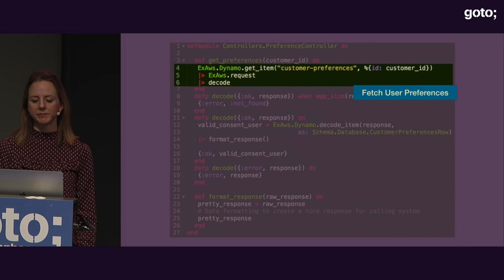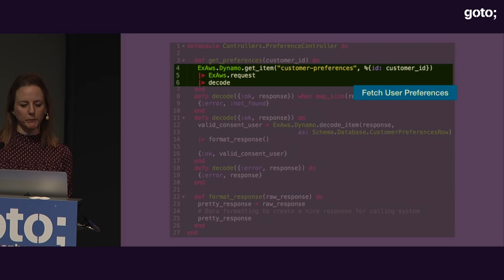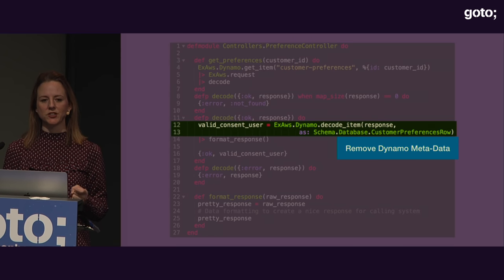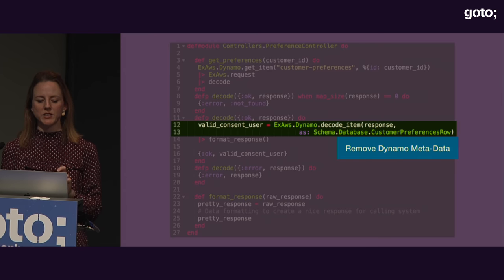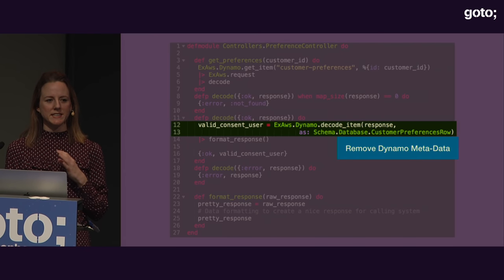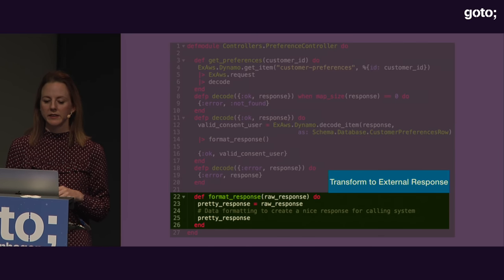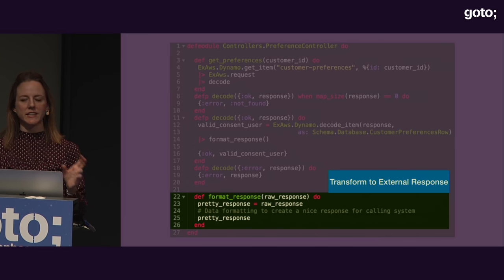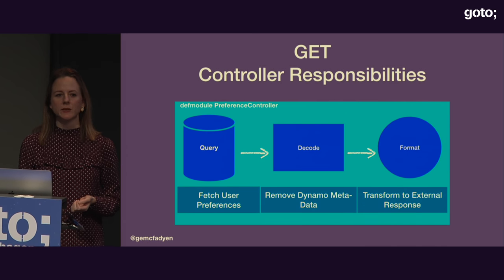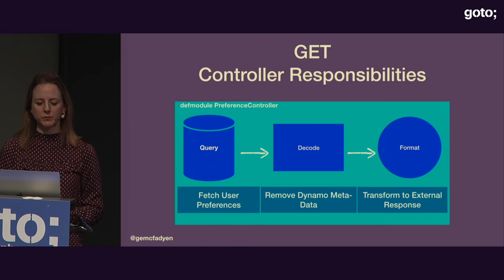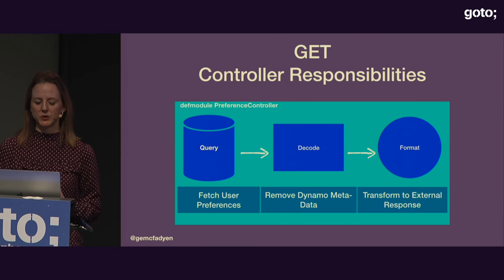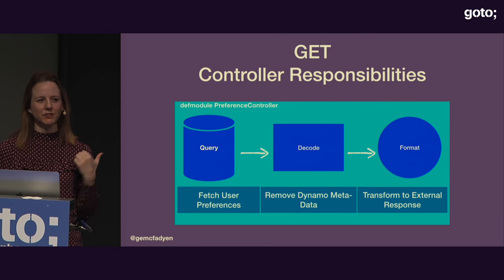We have our module. The first thing we need to do is query the database with the customer ID, which is obtained when the user is logged on. We then translate the raw database data into an internal struct, stripping out metadata that DynamoDB returns that we're not interested in. Then we transform that struct into JSON and return it to the calling client. In a nutshell, three steps: look up the data, strip out metadata, and translate to a JSON response.